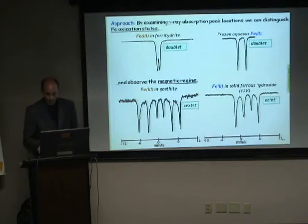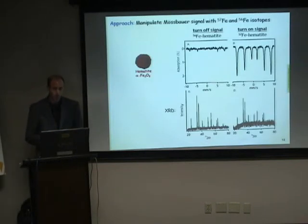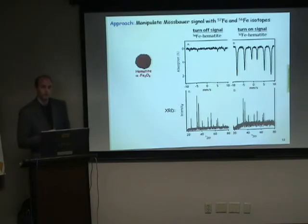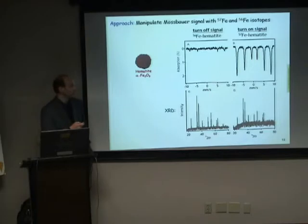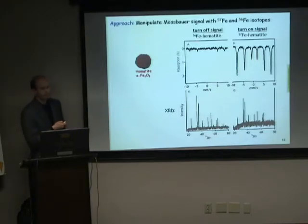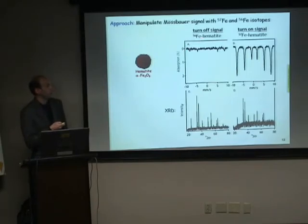When they are magnetically ordered, the most powerful part of using this technique is the selective use of different iron isotopes. We can turn the signal of an iron oxide off simply by not using iron-57 — we use iron-56 — and we have no signal. However, if we were to make the same oxide out of iron-57, then we do get a clear signal.